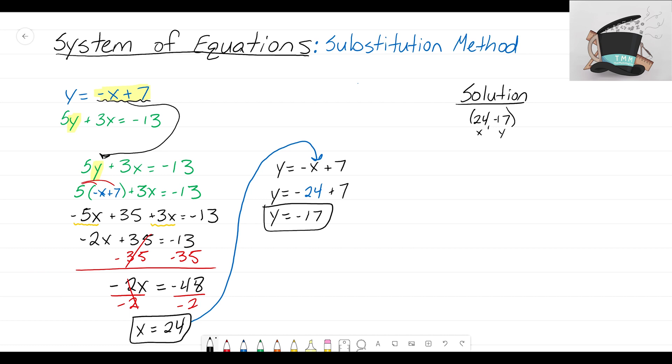This is why we do the substitution method - because equal values method just would not work. To recap: we have one expression that's equal to a variable. We knew that y equals negative x plus 7. We take that expression and substitute it in for that y in the second equation. Solve to get x by itself, then substitute that into the first equation to figure out what y was. All right guys, it's that math magician and I'll see you on the next video.